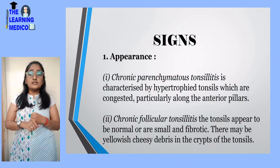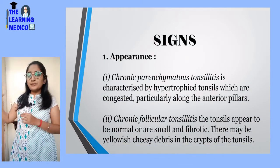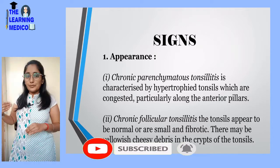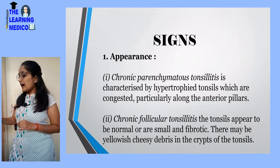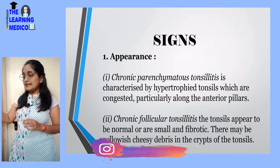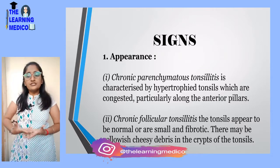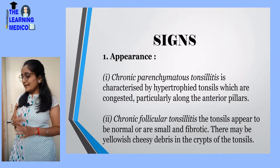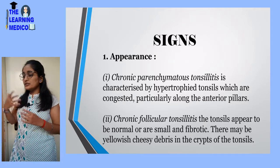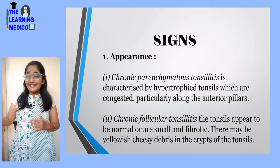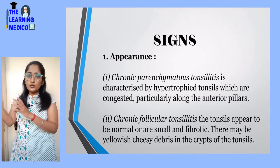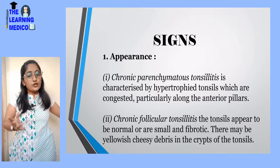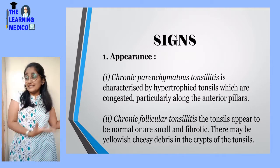Next are the signs. First is appearance. There are two types: chronic parenchymitis tonsillitis and chronic follicular tonsillitis. In chronic parenchymitis tonsillitis, the hypertrophic tissues are congested, particularly on the anterior pillars. In chronic follicular tonsillitis, the tonsil appears normal or small with fibrosis. In parenchymitis there is congestion, while in follicular tonsillitis there is cheesy material — pus formation and yellow cheesy debris.